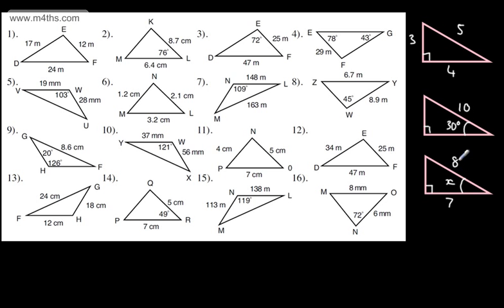If you need to recap those videos, please go back and watch them, as we're now going to move on to what we would call scalene triangles, or triangles where we don't have a perpendicular height. We're still going to use these, but we're now moving on to triangles like these ones shown. So let's see when we would use the cosine rule and the sine rule.